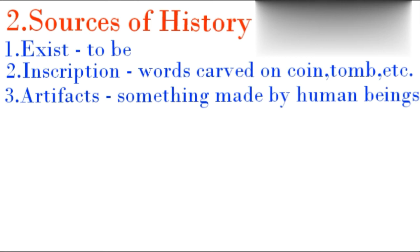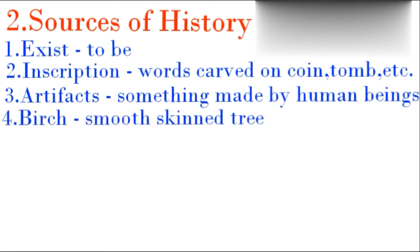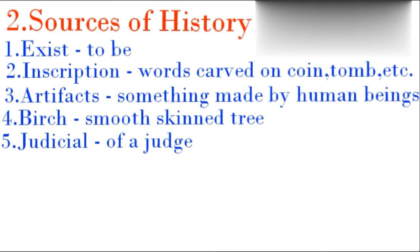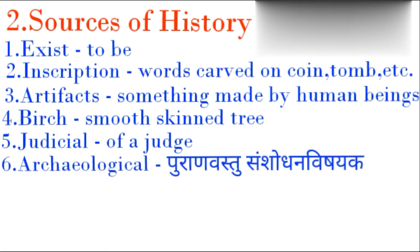The fourth word is 'birch', meaning a smooth-barked tree. The fifth word is 'judicial', meaning of a judge. In Marathi, Nyai vishayak.